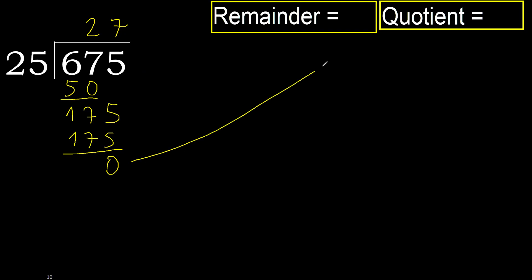Therefore, finish it. 675 divided by 25 is 27.